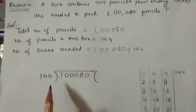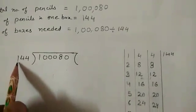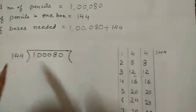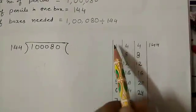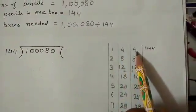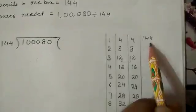Let us do the division now. For the multiples of 144, I will make the table of 144 first. I have written the table of 4, now with the help of this, I will make the table of 144.